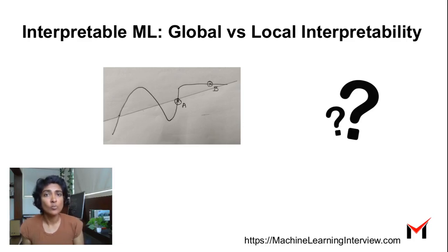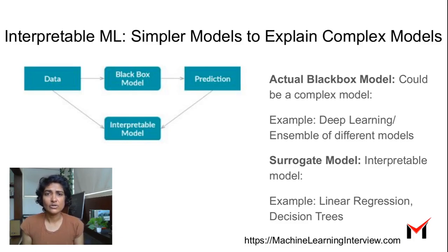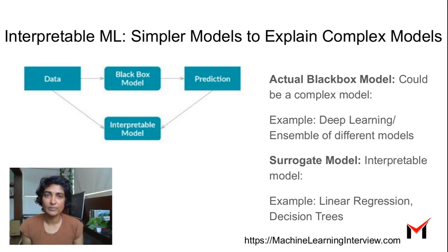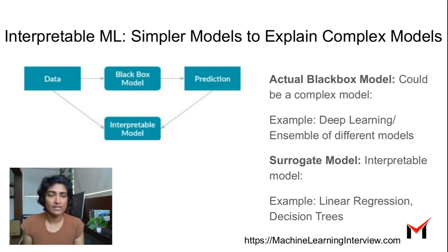What do we mean by global interpretability versus local interpretability? Interpretable ML typically involves building simpler models that explain the more complex models. The complex models accurately model your data, but simpler models like linear regression or decision trees are easier to explain. Can we build a simpler interpretable surrogate model that takes the original features as input and the output of your black box model as the target?